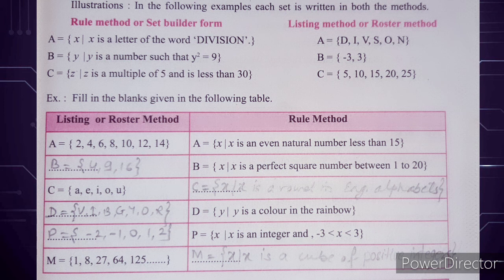Next example: B is the set of all y such that y² = 9. The square of 3 is 9, and the square of -3 is also 9, since (-3) × (-3) = 9. So the answer in listing method is B = {-3, 3}.